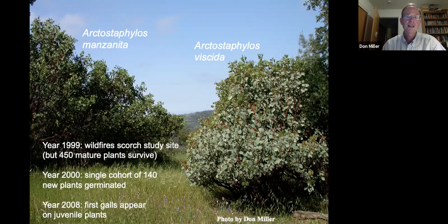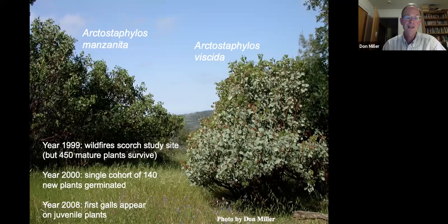On the left is Arctostaphylus manzanita, or common manzanita; on the right, Arctostaphylus viscida. By the year 2008, I realized the very first galls appeared on the young plants, which were then eight years old — they germinated in 2000 and first began to sustain aphid galls at that time. This provided an opportunity to track galls in time and space and record when they first appeared and on which plants.